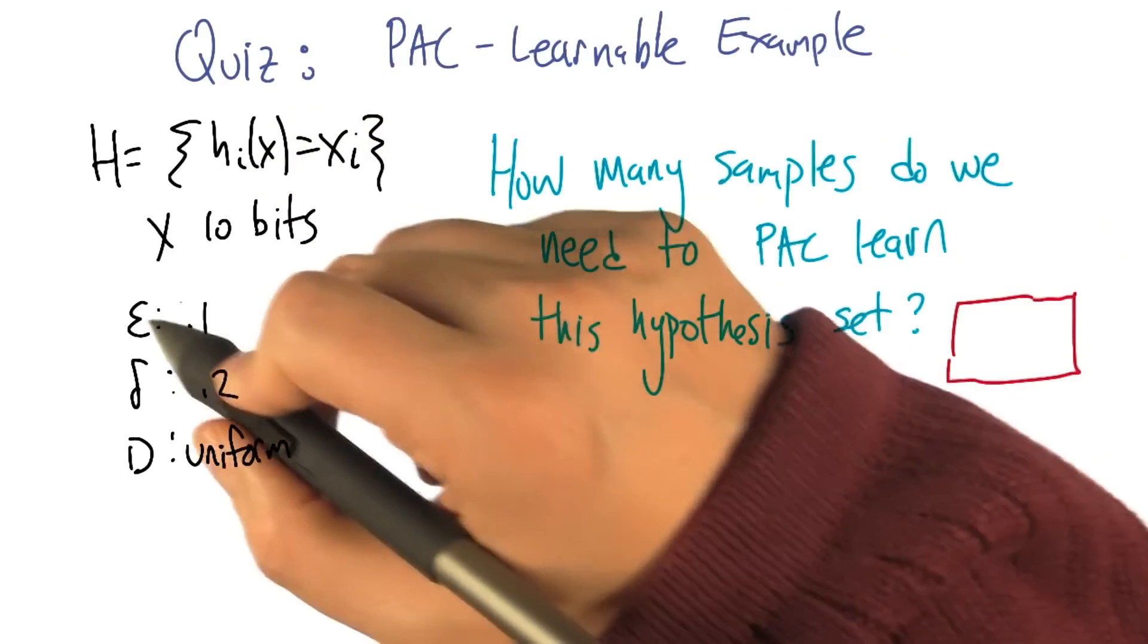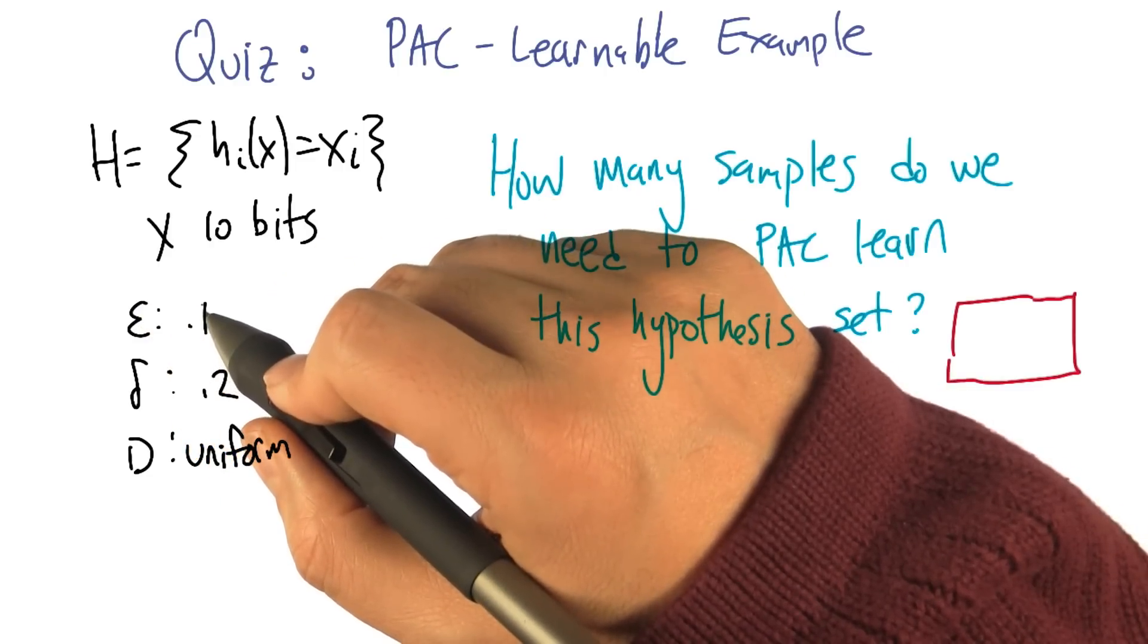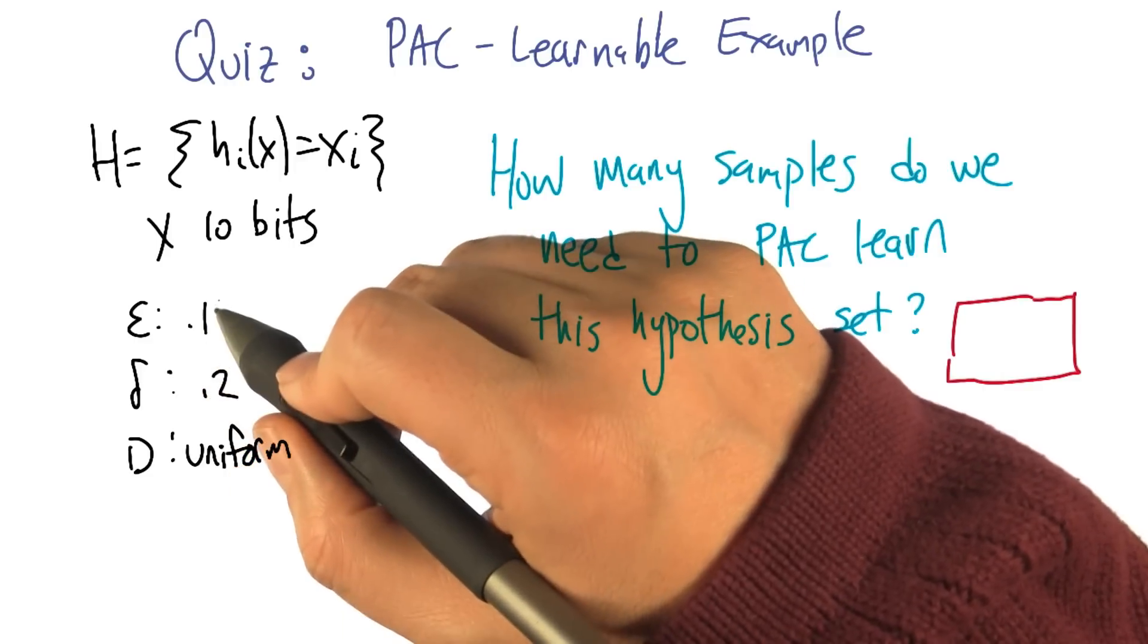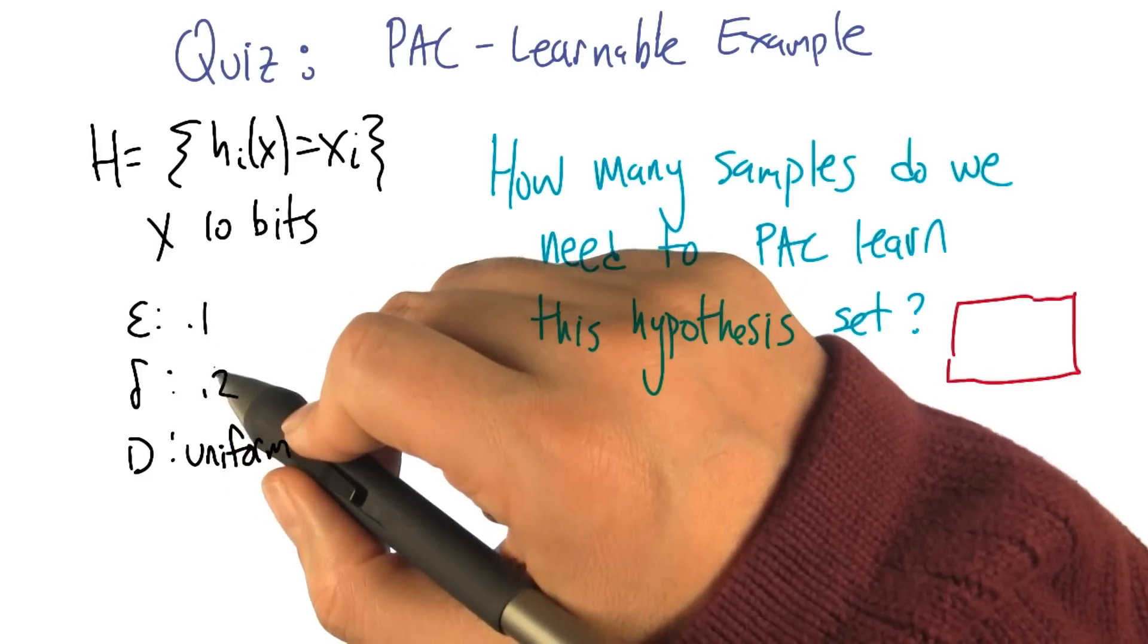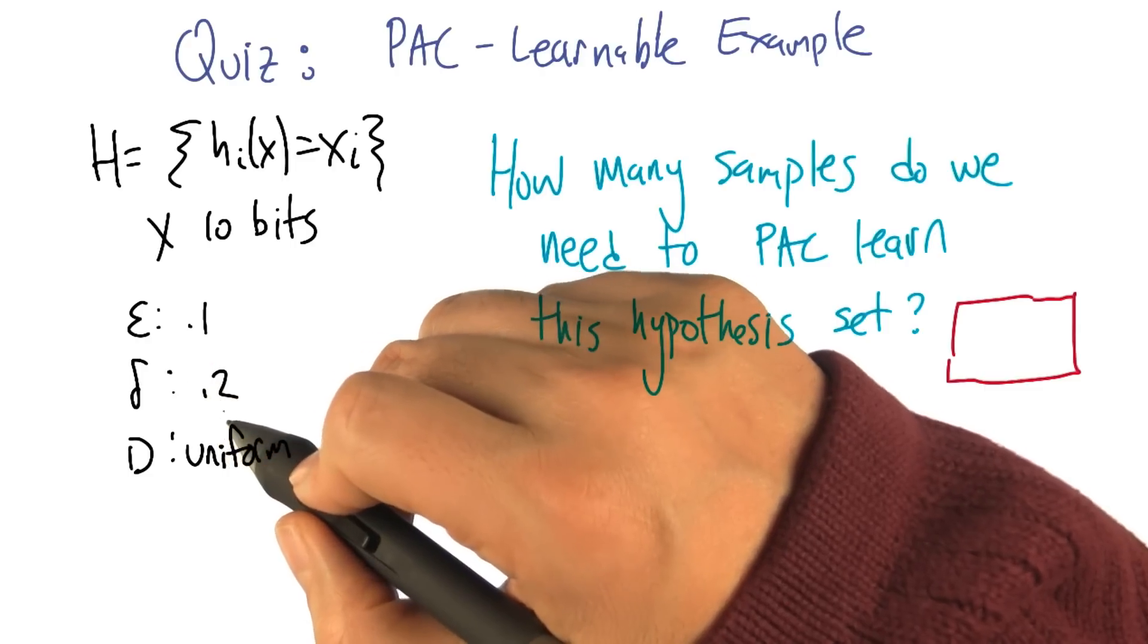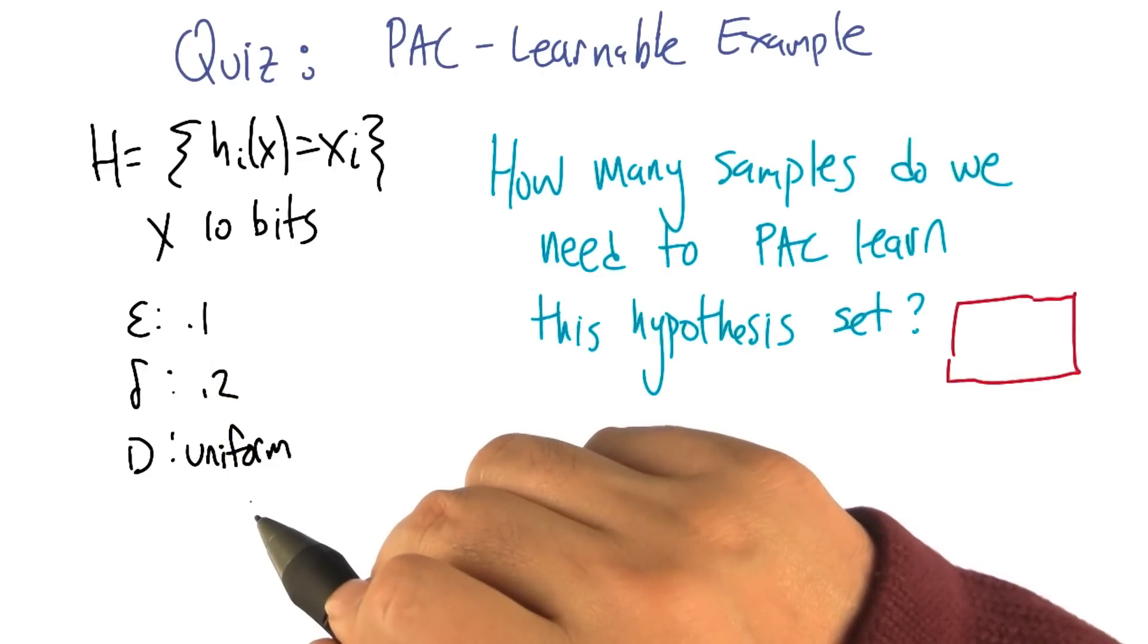And now we have a target of epsilon equals 0.1. So we would like to return a hypothesis whose error is less than or equal to 0.1. And we want to be pretty sure of it, the error or failure probability needs to be less than or equal to 0.2. And let's just say for concreteness that our distribution over inputs is uniform.